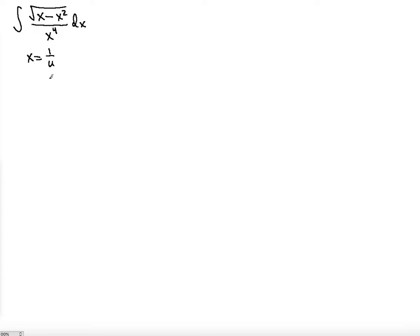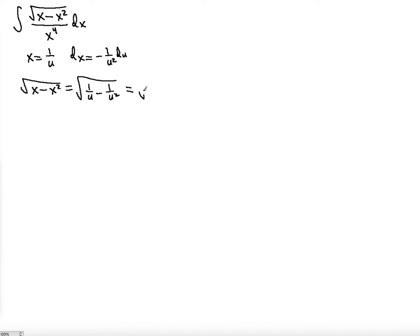Set that, and then dx will be negative 1 over u squared du. The top, square root of x minus x squared, is going to be 1 over u minus 1 over u squared, which you can combine into a single fraction: u minus 1 over u squared, all under the square root. That yields square root of u minus 1 over u.